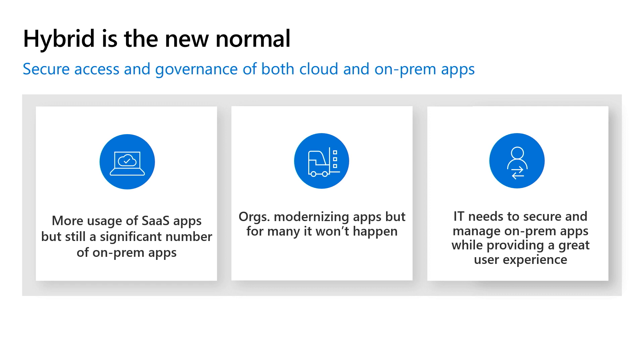Hybrid is the new normal. We know that more and more SaaS applications — software-as-a-service applications — have come to the enterprise, but it is a fact that 60 to 80% of applications organizations have today are not there yet. These are applications that have legacy methods of authentication, like Kerberos or header-based authentication. And although many of these organizations have solid plans to modernize those applications and change the authentication stack to talk to modern protocols, the reality is that there's a significant amount of applications that are not there yet, and that may not be there for a long period of time.